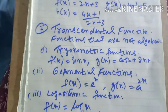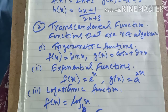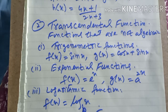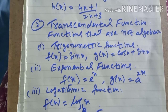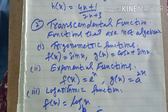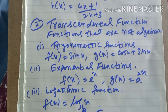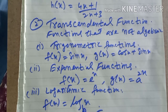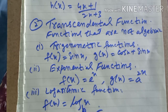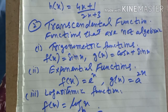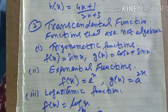Then there is the exponential function, such as f(x) = eˣ or g(x) = a^(2x). We call these exponential functions. Here eˣ and a^(2x) are examples, and f(x), g(x), h(x) are just names we give to functions — we can give them any name.